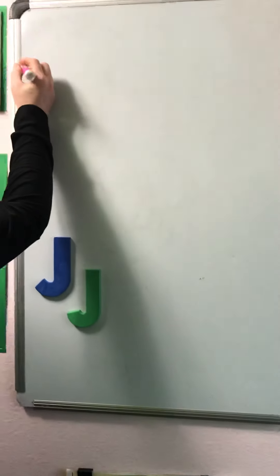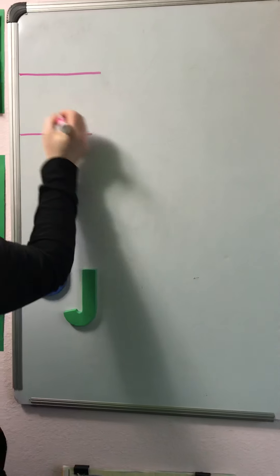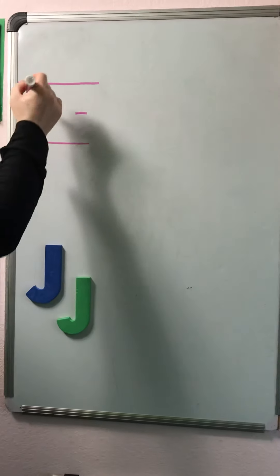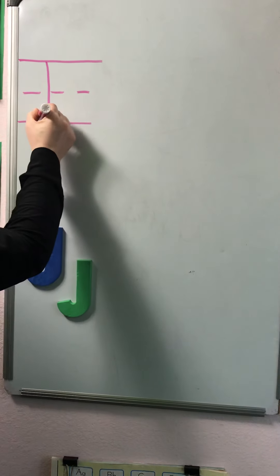When we write the letter J, it looks like this. We have our top line, our dotted line, and our bottom line. Start at the top, go to the bottom, curve it up.